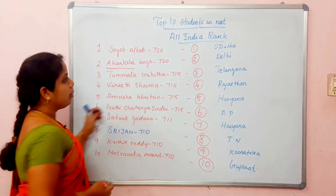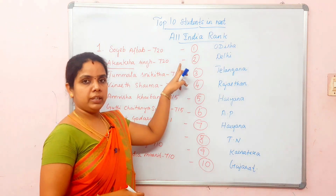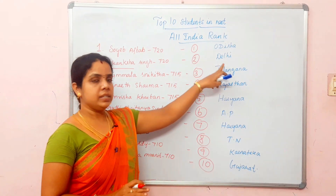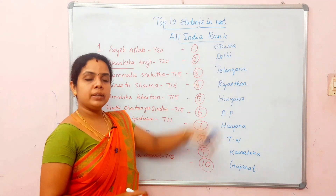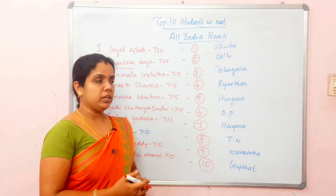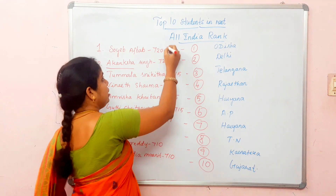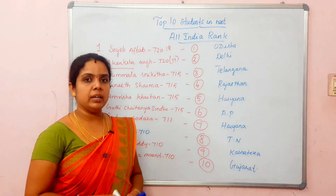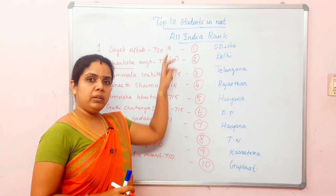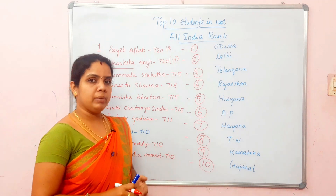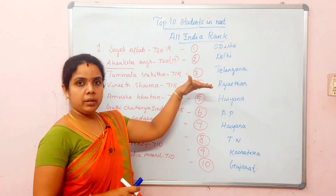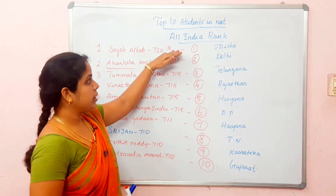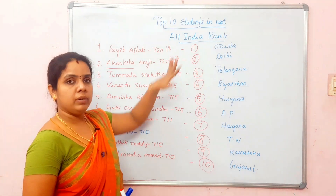Then, Akansha Singh — there is a girl who also received the same mark: 720. But she is in second rank. She is from Delhi. If you look at the first rank and second rank, this student's age is 18 and she is 17. So, if you look at age as the tiebreaker, when two students have the same mark, the older student gets a higher rank.